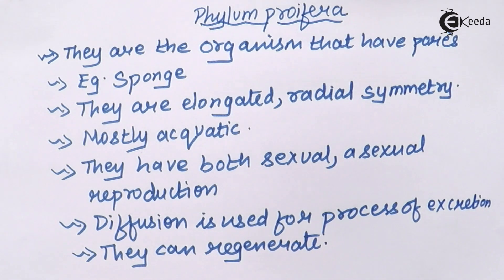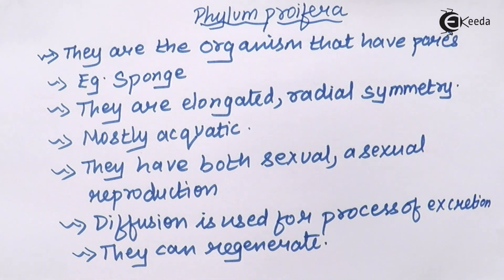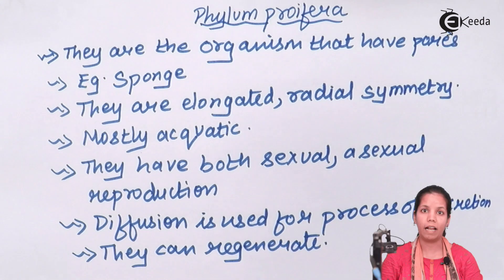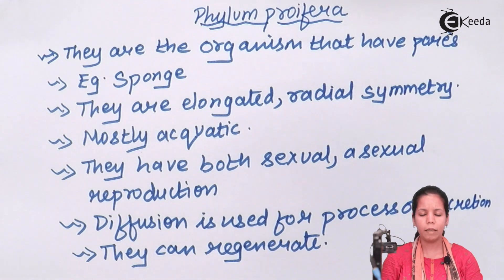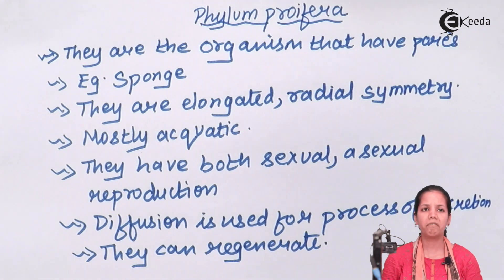Wherever sponges are present, you will get a feeling of a slippery region — they have slippery bodies. Also, their body shape changes accordingly and they are very fluctuating in body shape.